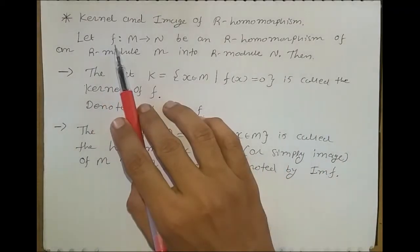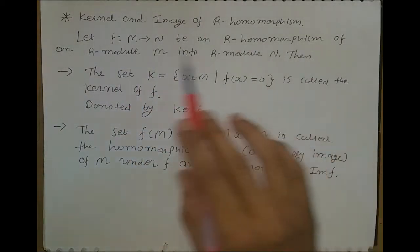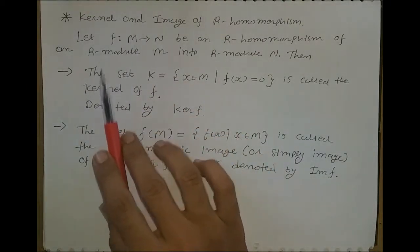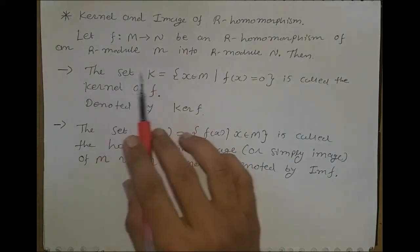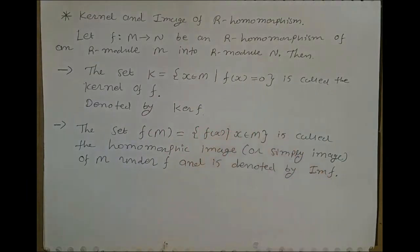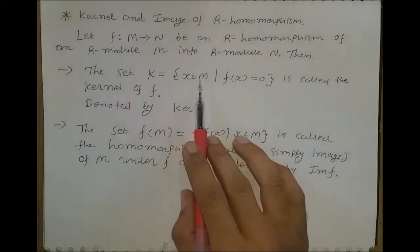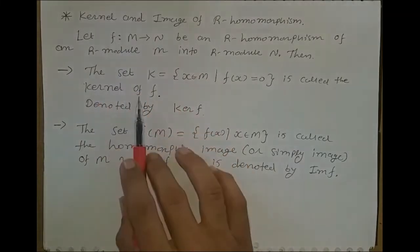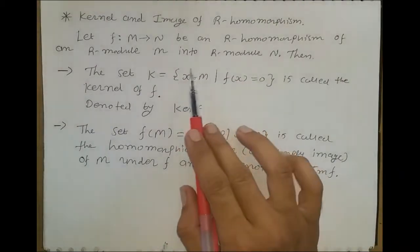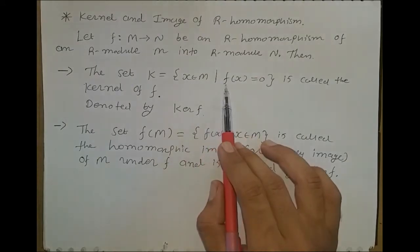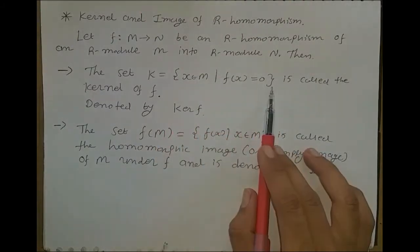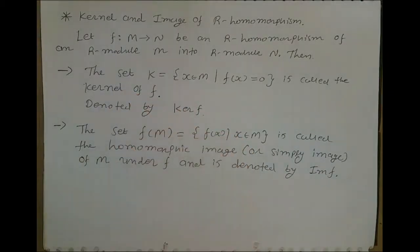If F is an R-homomorphism from an R-module M to an R-module N, then the definition of the kernel of R-homomorphism F is: the set K equals the set of all x belonging to M such that F(x) equals 0. This set is called the kernel of R-homomorphism F, denoted by ker(F). That means the set of all elements of M such that when we apply the function on this element, we get 0.